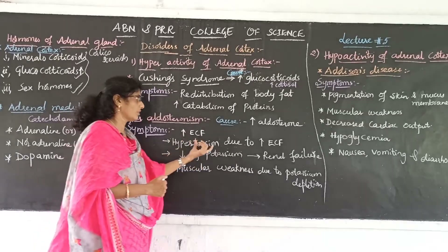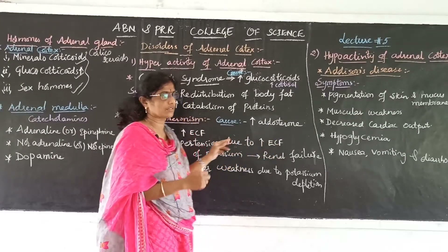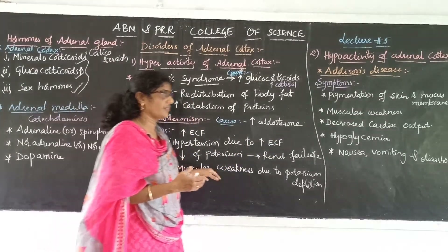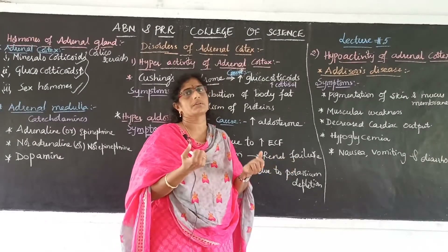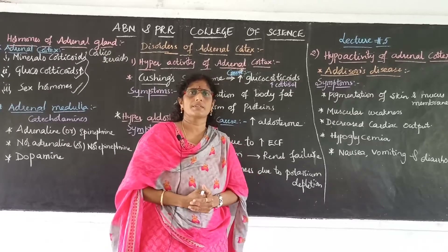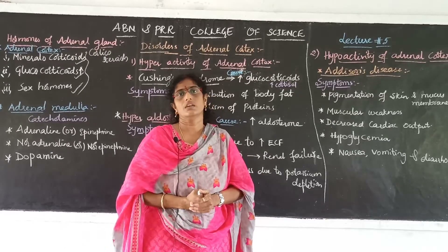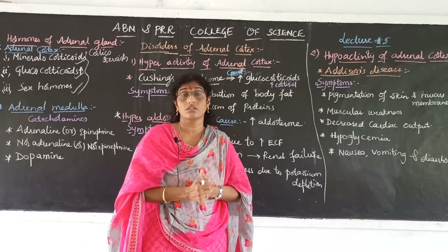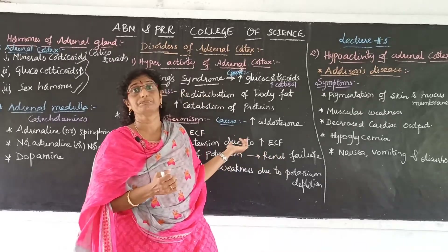Hypertension is also found in hyperaldosteronism. Muscular weakness is found when there is potassium depletion. Even sodium depletion leads to muscular weakness — both conditions produce a similar presentation of muscular weakness.